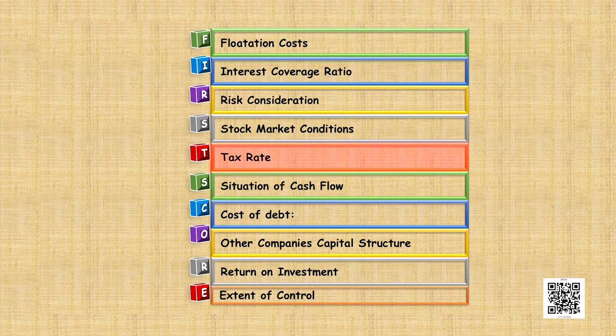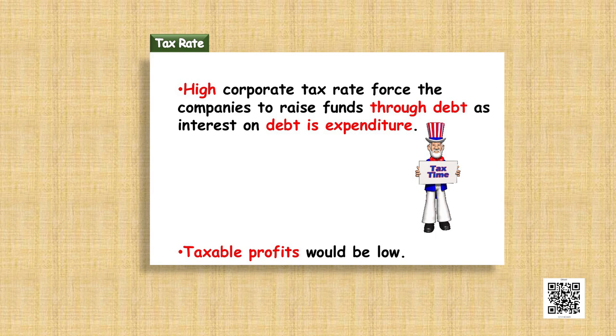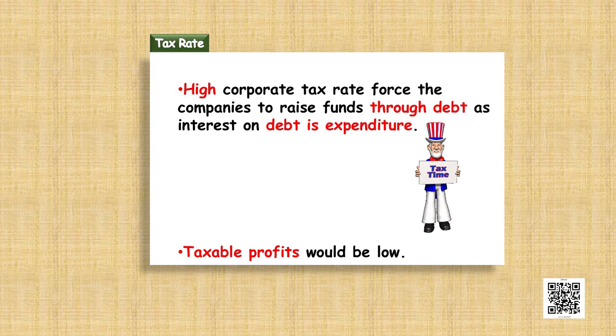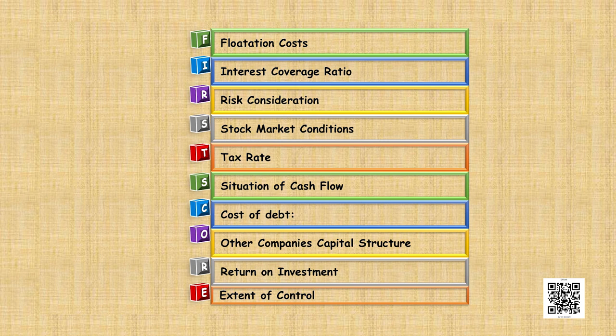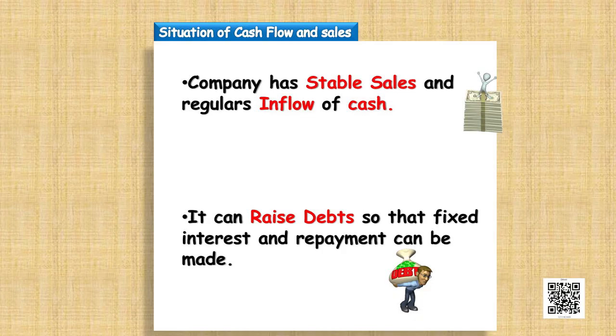The next factor affecting capital structure is tax rate. A higher corporate tax rate forces the company to raise funds through debt because interest on debt is a tax deductible expense, decreasing taxable profit and leading to savings. At high tax rates the company should prefer issuing debt; if tax rate is low the company should prefer issuing equity. Then we have the situation of cash flows — if the company has stable sales and regular inflow of cash it can easily raise debt because it can pay interest and meet repayment obligations.